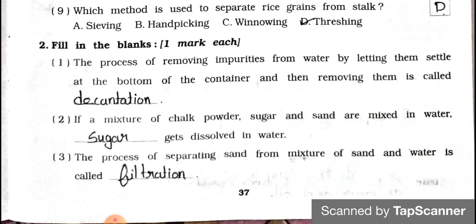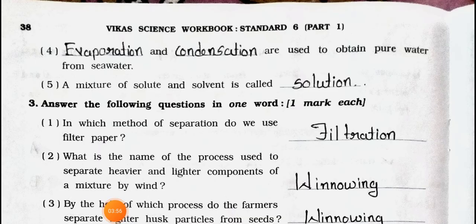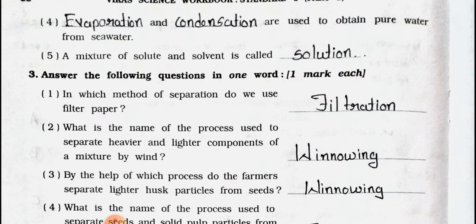Number three: The process of separating sand from a mixture of sand and water is called filtration. Number four: Evaporation and condensation are used to obtain pure water from sea water.